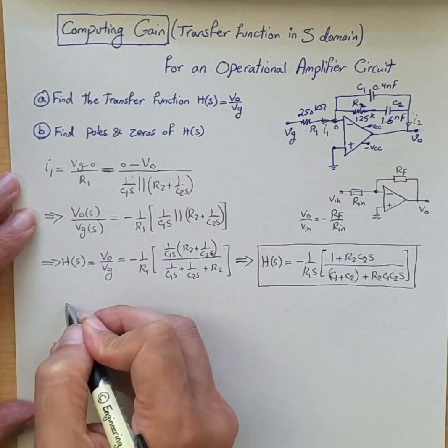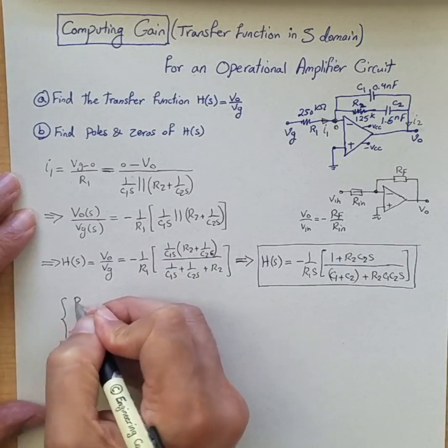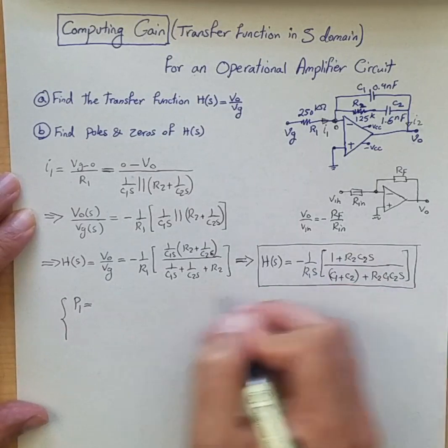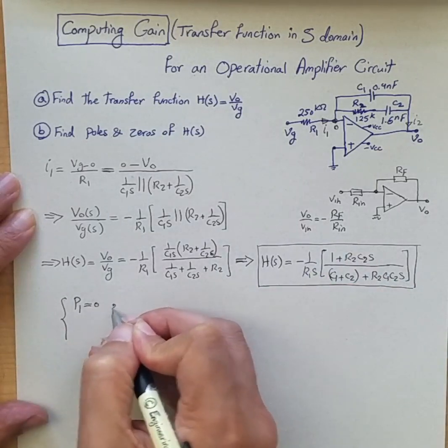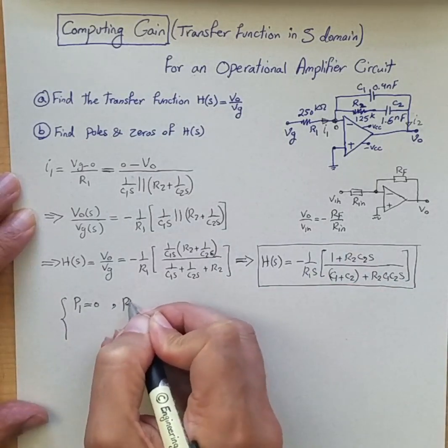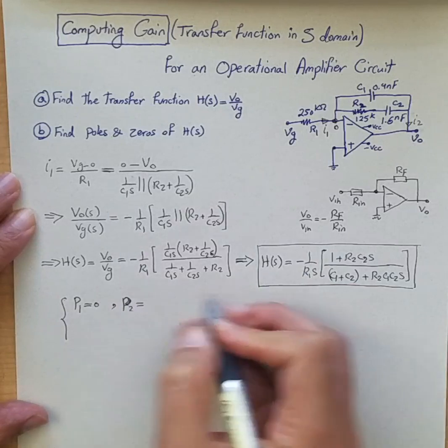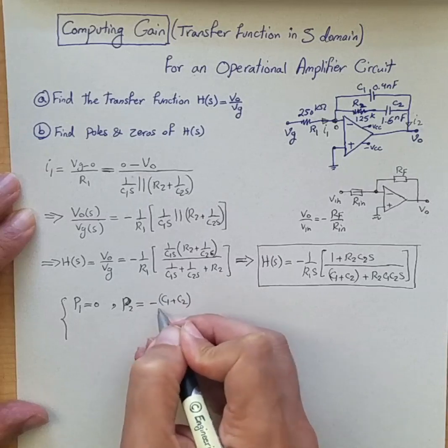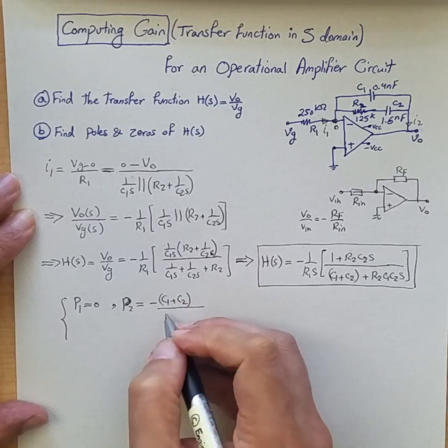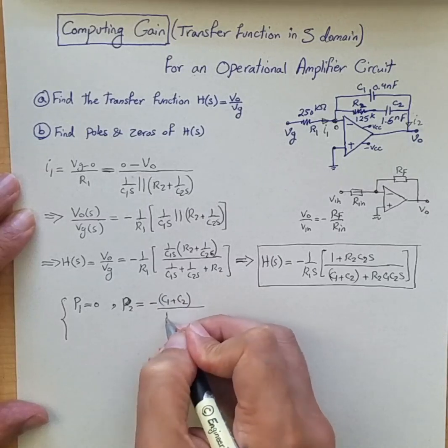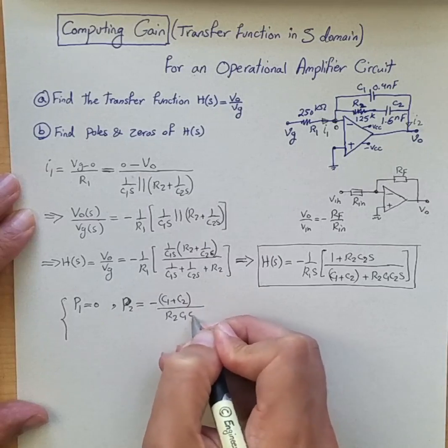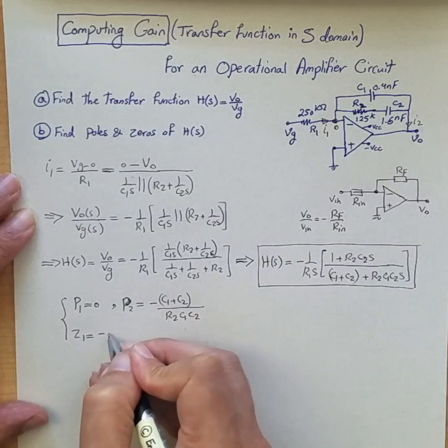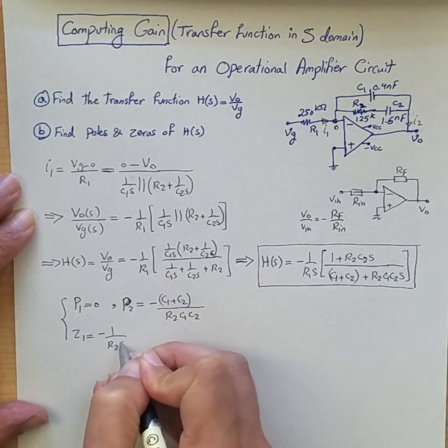So we can say the poles are like this: P1 is from coming from this and that's a pole at 0, and P2 is the pole coming from here is minus C1 plus C2 divide by R2 C1 C2, and then Z1 is the zero coming from this guy which is minus 1 over R2 C2.